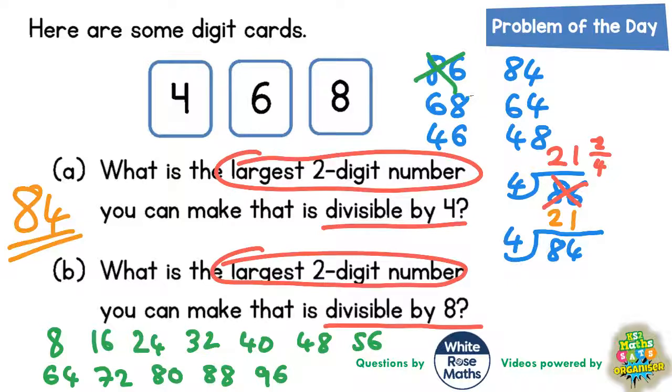84 is not in the eight times table either. The next biggest is 68. That's not in the eight times table, but the next biggest is 64. And that is in the eight times table there. So it looks as though the largest one we can make that is divisible by eight is 64.